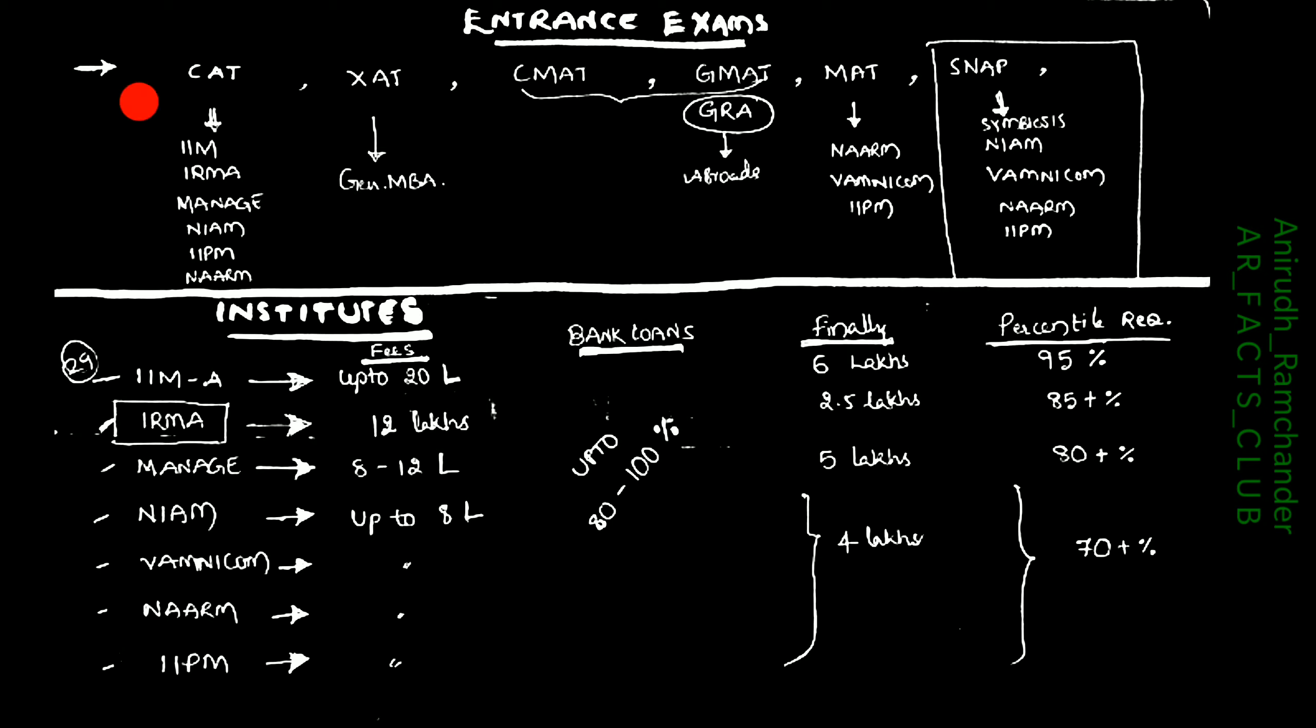Coming to entrance exams, CAT can give admissions to all the institutes mentioned below for both PGABM and PGDM. GZAT only has general MBA. GMAT and GRE can give admissions even in abroad too. Here, central and state governments look after bank loans for studying abroad. MAT holds NAM, WAMNICOM, IIPM, and SNAP exam holds Symbiosis NIAM, WAMNICOM, NAM, IIPM.